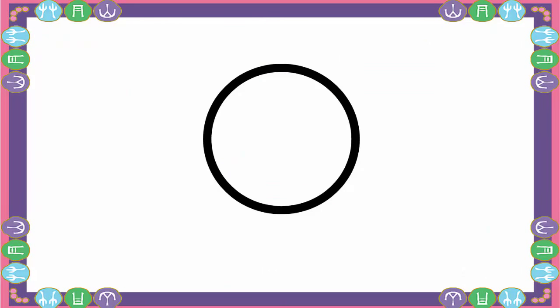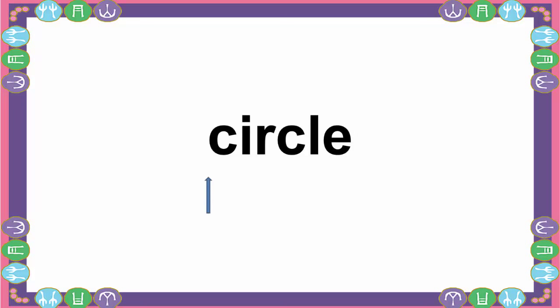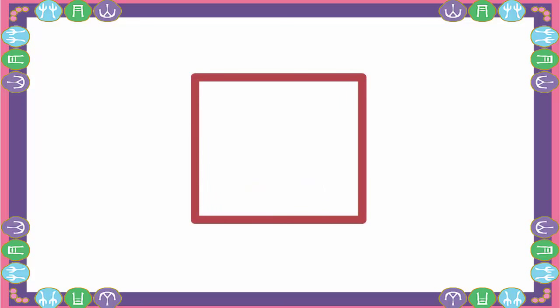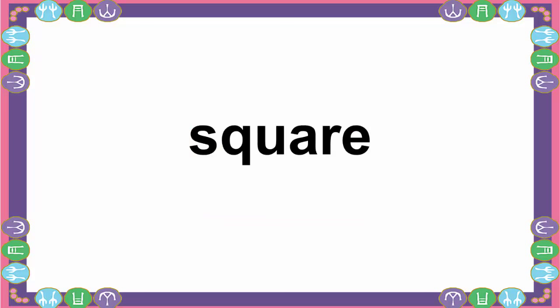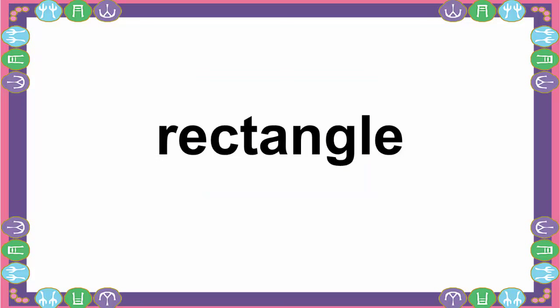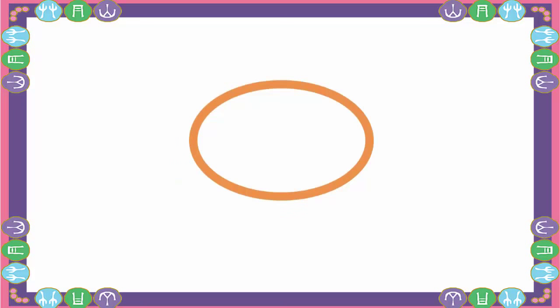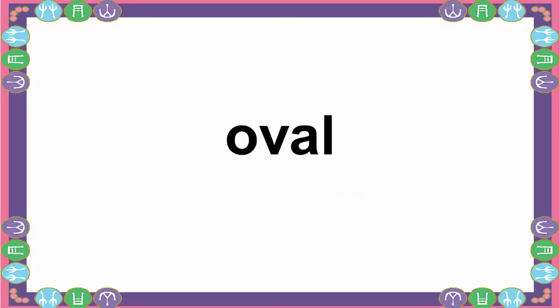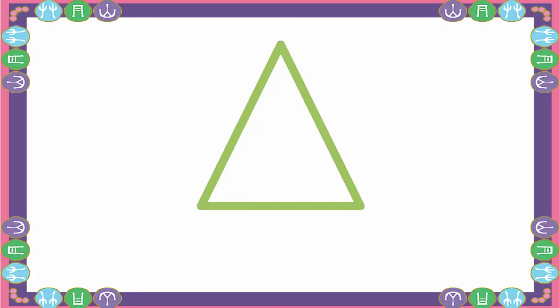What shape is this? Circle. What shape is this? Square. What shape is this? Rectangle. What shape is this? Oval.